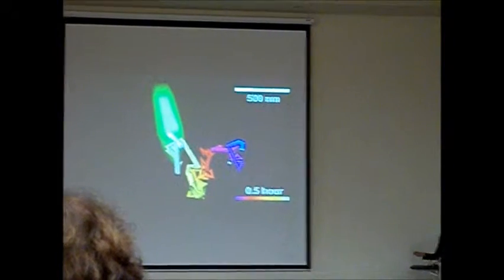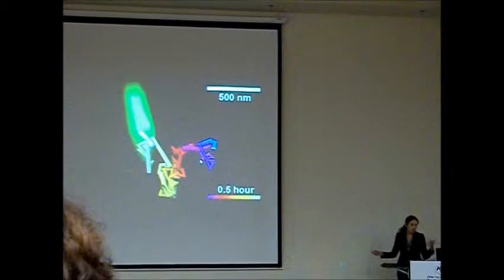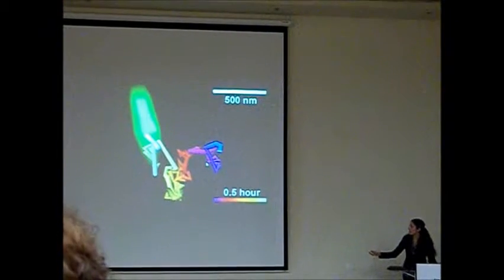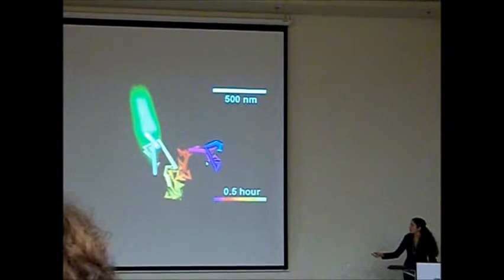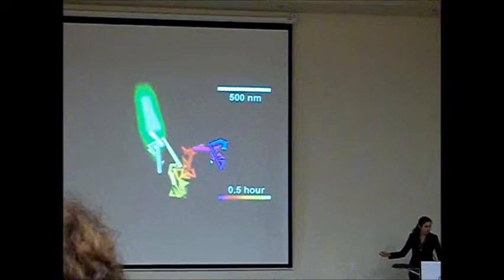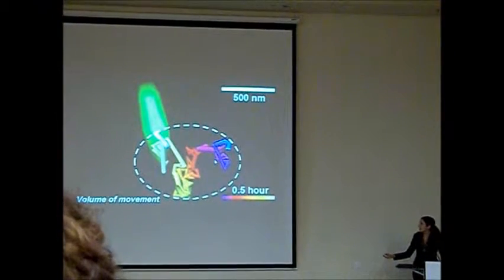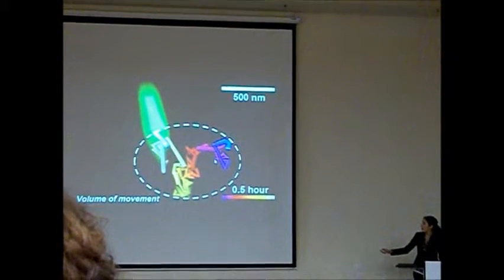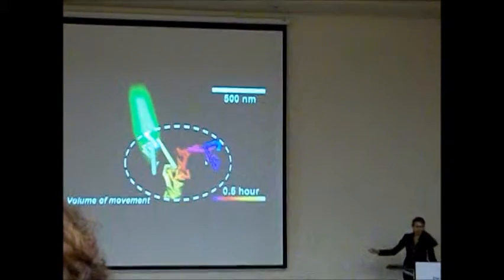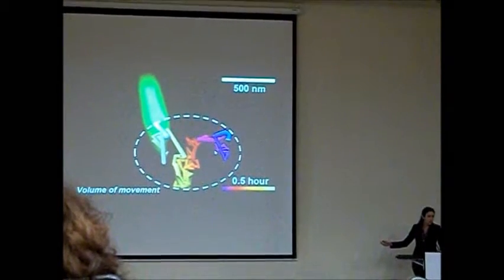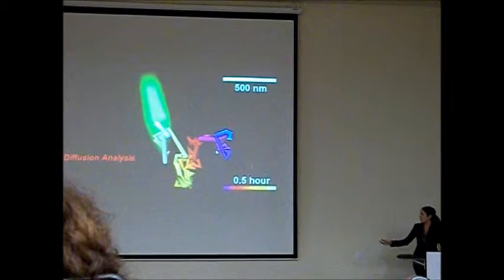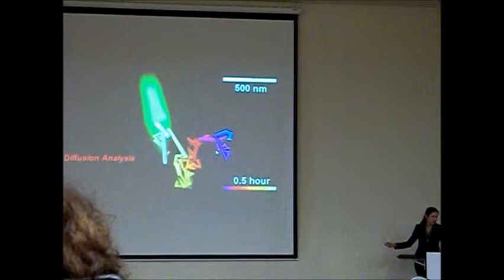For the trajectory of each telomere, or it doesn't matter, it can be any genomic region, which is marked here as green, since I use green fluorescence protein in order to mark it, you can find the volume of movement. And everyone can understand that the longer will be the trajectory, the higher will be the volume of movement. Or we can produce the diffusion analysis, since trajectory is just coordinate as a function of time.